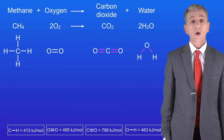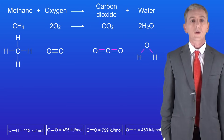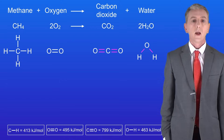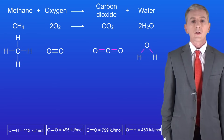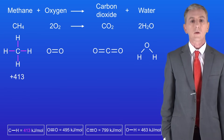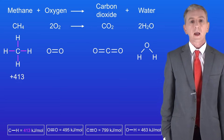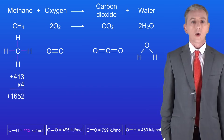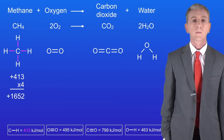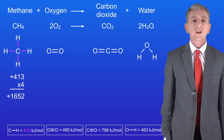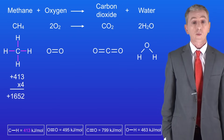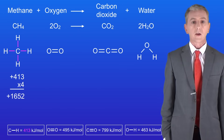First we've got four carbon to hydrogen bonds in the methane molecule. The bond energy of a carbon hydrogen bond is 413 kilojoules per mole. Multiplying this number by four gives us a value of 1652. This needs to be positive as breaking bonds is endothermic.